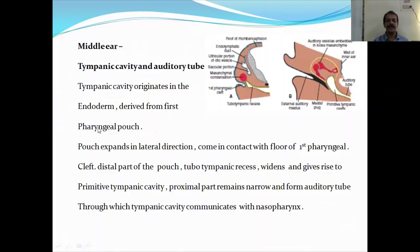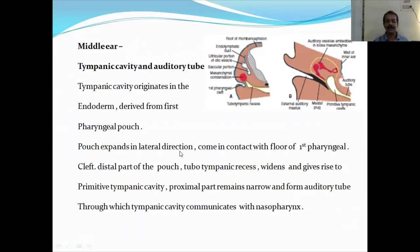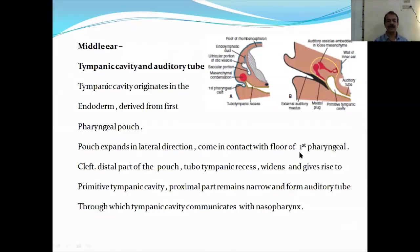The tympanic cavity originates in the endoderm derived from the first pharyngeal pouch. Here you can see the first pharyngeal pouch and the first pharyngeal cleft. This pouch expands in the lateral direction, comes in contact with the floor of the first pharyngeal cleft, and the distal part of the pouch — known as the tubotympanic recess — widens and gives rise to the primitive tympanic cavity. The proximal part remains narrow and forms the auditory tube, or Eustachian tube, through which the tympanic cavity communicates with the nasopharynx.